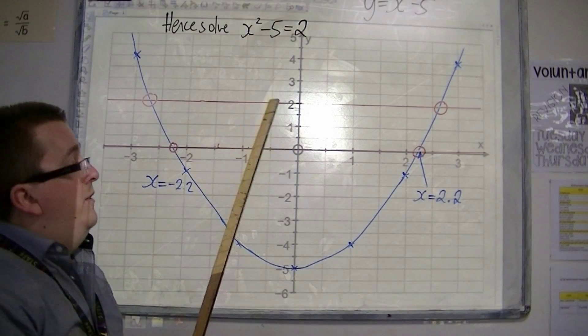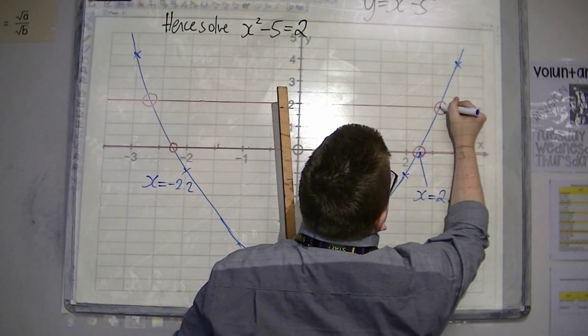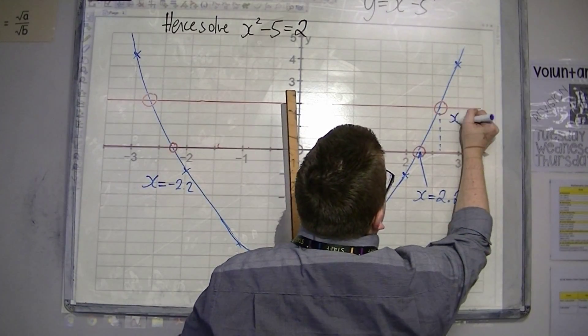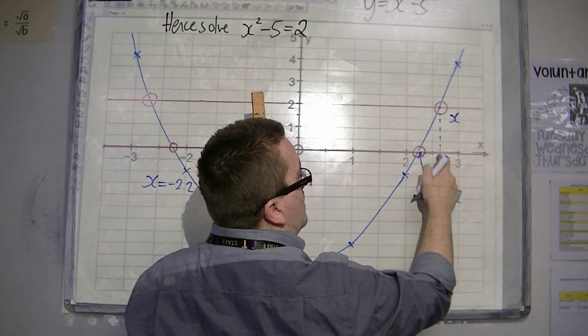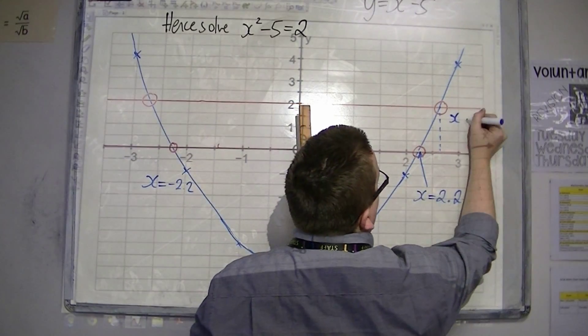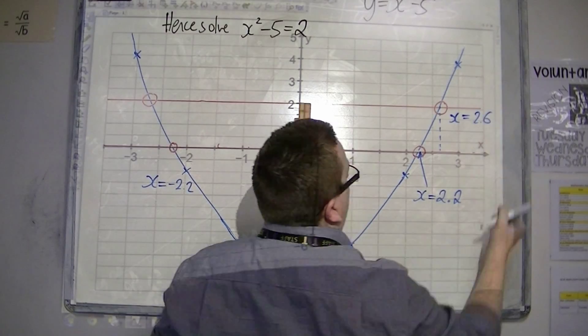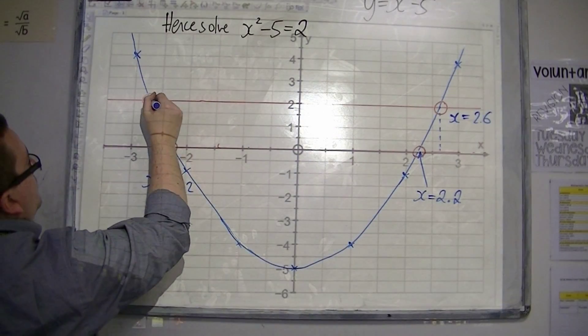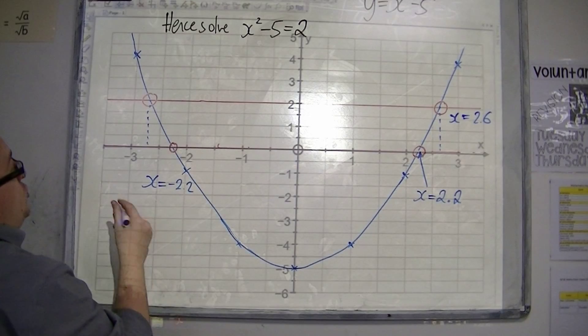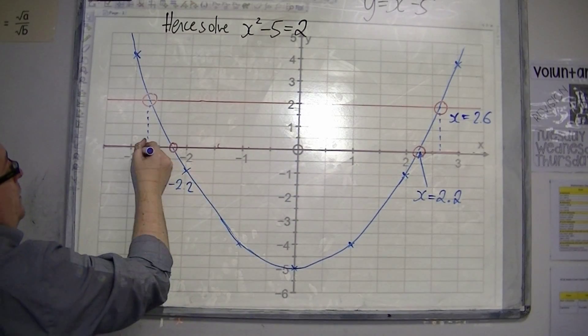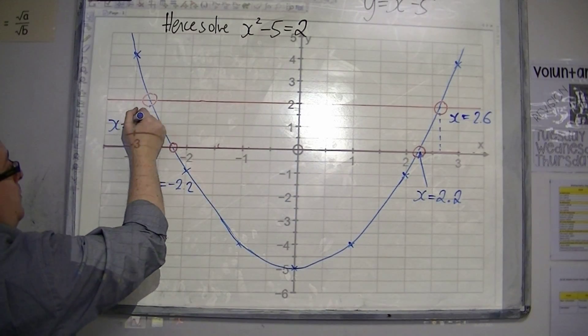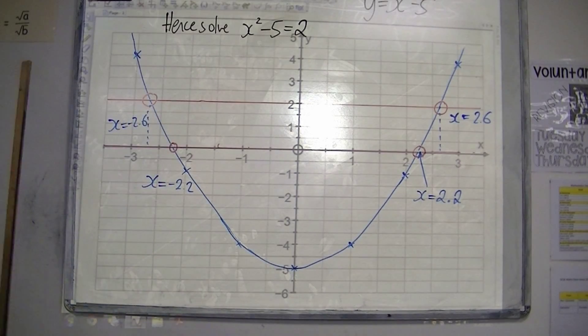And on my graph, looking at that point, I'd probably be going, well, that's 2.5, that's 3. So, that's probably about 2.6. And this point should be roughly the negative of that one. So, I'm going to write that as x equals minus 2.6. Roughly.